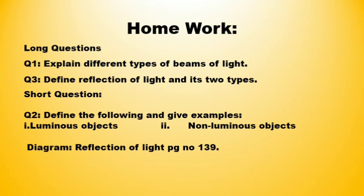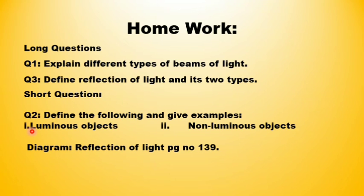Now it's time for your homework. There are two long questions and one short question. Question number one and three are long questions. Question number one is: explain different types of beams of light. Question number three is: define reflection of light and its two types. Question number two is a short question: define the following and give examples — luminous object, non-luminous object. Draw the diagram of reflection of light, which is given on your book page number 139. This is your homework.